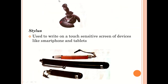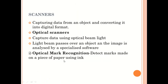Here is an example of a joystick at the top. Then we have the stylus. The stylus is mainly used to write on a touch-sensitive screen of a smartphone or a tablet. A stylus is just like a pen, but it is touch sensitive and used on a touch-sensitive screen. It's a special pen that can be used on a touch-sensitive screen, and you can see examples right there.